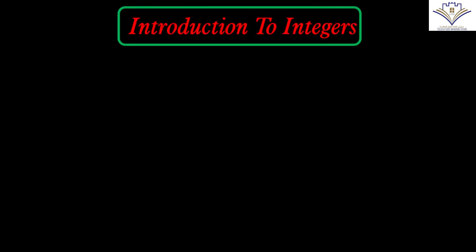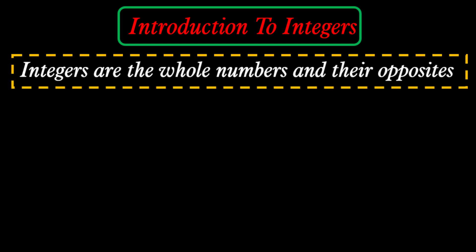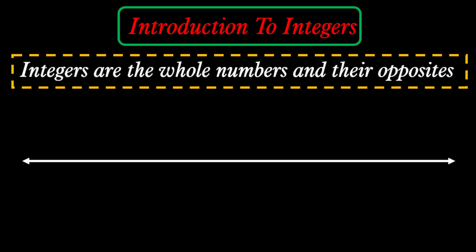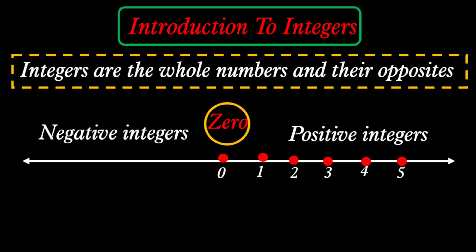Hi, this is Mr. Samir. Our lesson today is an introduction to integers. Integers are the whole numbers and their opposites. To define integers, we will draw a number line. At the middle we have zero. To its right we have the positive integers, which are 1, 2, 3, 4, 5, and so on. To the left we have the negative integers.